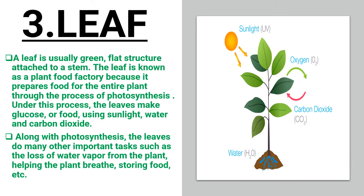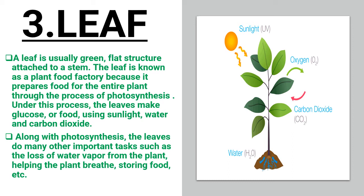The third part is the leaf. A leaf is usually a green, flat structure attached to a stem. The leaf is known as the plant's food factory because it prepares food for the entire plant through the process of photosynthesis. Under this process, the leaves make glucose using sunlight, water, and carbon dioxide. Along with photosynthesis, leaves also perform other important tasks such as loss of water vapor from the plant, helping the plant breathe, and storing food.